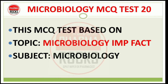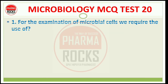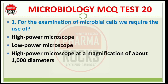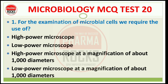Microbiology MCQ test number 20. This MCQ test is based on topic microbiology — important facts regarding the microorganism and subject microbiology. Question number 1: For the examination of microbial cells, we require the use of high power microscope, low power microscope, high power microscope at the magnification of about 1000 diameters, or low power microscope at the magnification of about 1000 diameters.